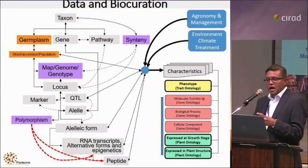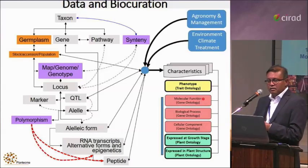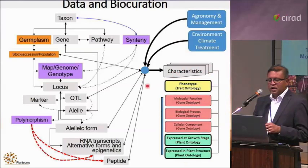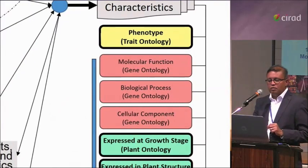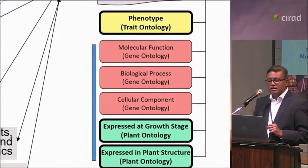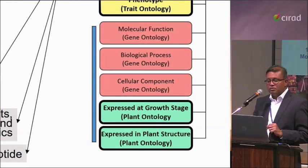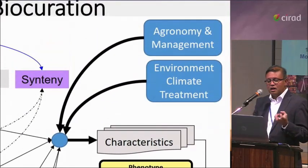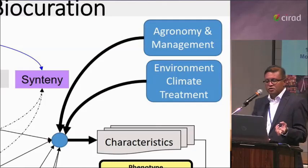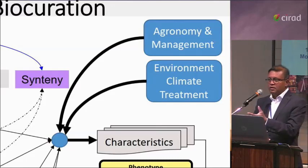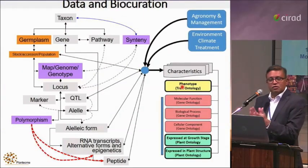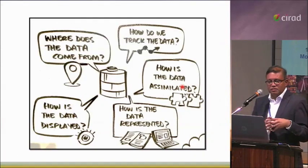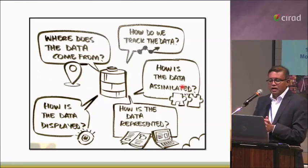Ultimately, for application on the ground for farmers or breeding trials, you're looking at characteristics — how all these things contribute. This is where ontologies come in: trait ontology, gene ontology defining cellular and molecular levels, and plant anatomy and growth stages. All these characteristics depend on how plants and populations are grown — climate, environment, treatments, management practices, and where they are grown. These are all the ontologies we're talking about, and they pose major challenges around tracking and displaying data.